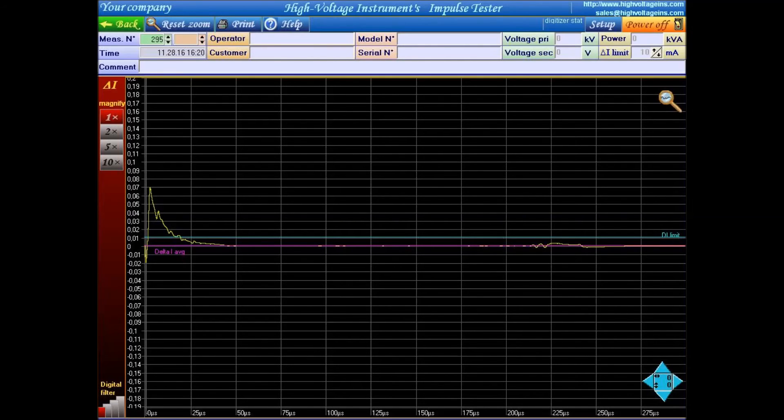The red line is a measured current difference integrated from 20 microseconds to 100 microseconds. It is less than 10 milliamp. The transformer will pass.